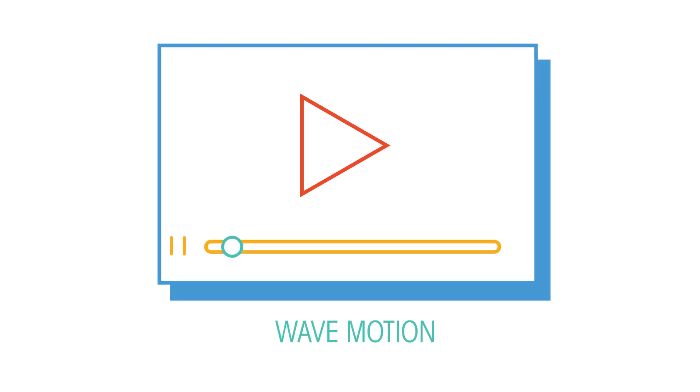You may want to watch that first, before we look at using these values in equations to calculate the speed at which they can travel. The frequency, wavelength, and how fast the wave is travelling are all connected.